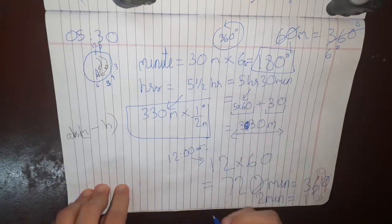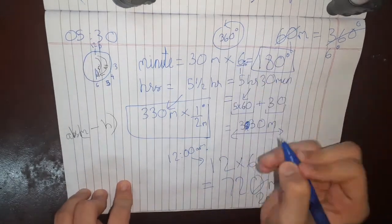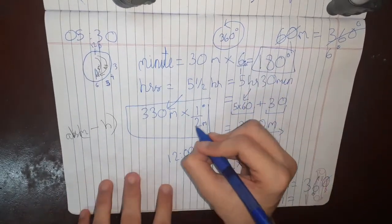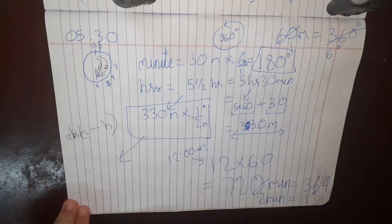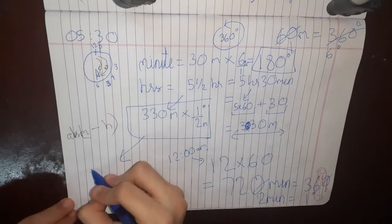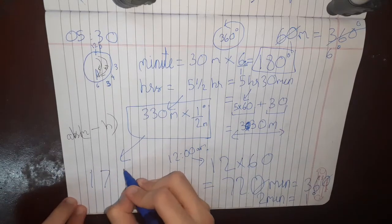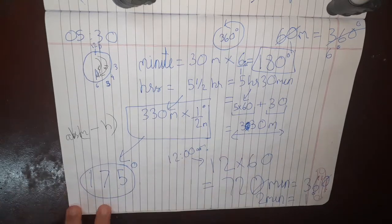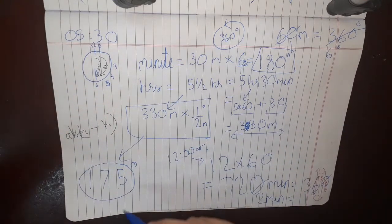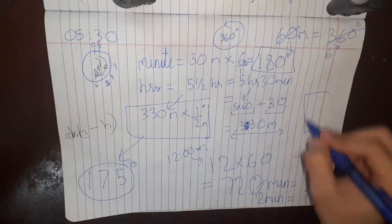Minute to degree, here it was 6 upon 1. So what I get over here is 165 degrees. What is the difference between 165 and 180? The difference is 5 degrees.